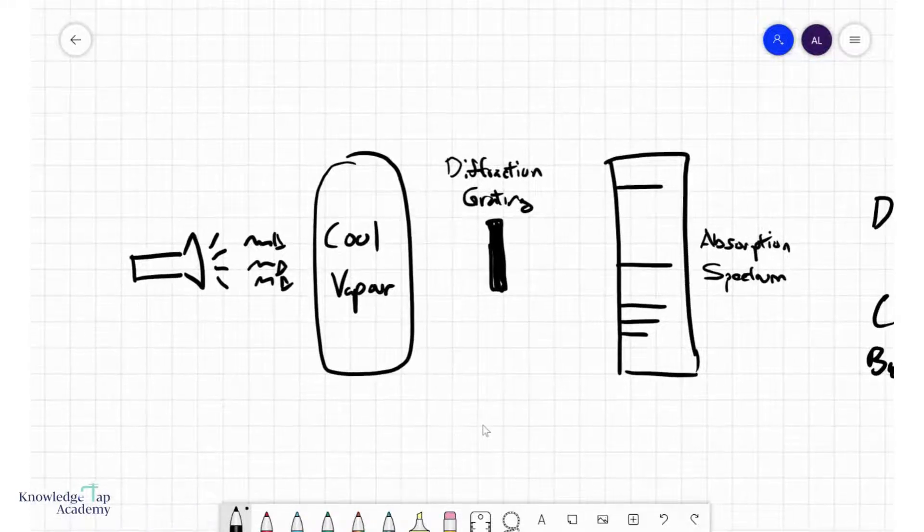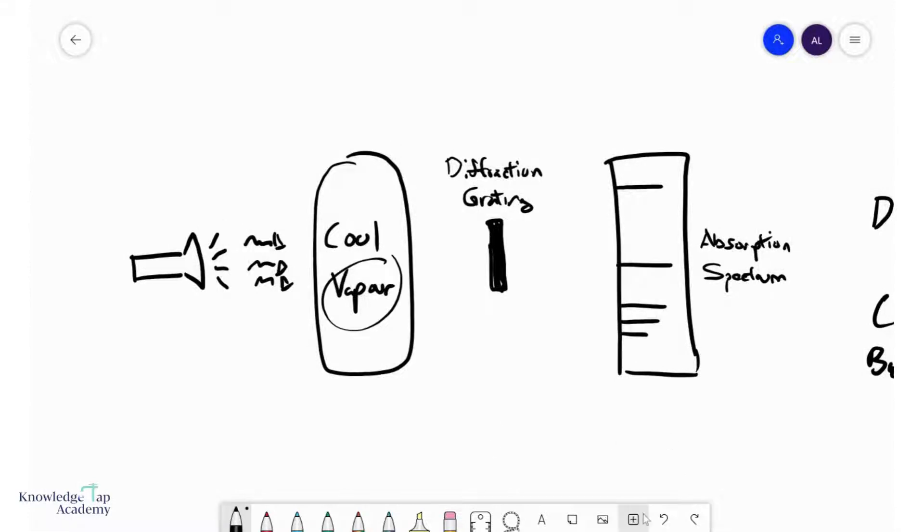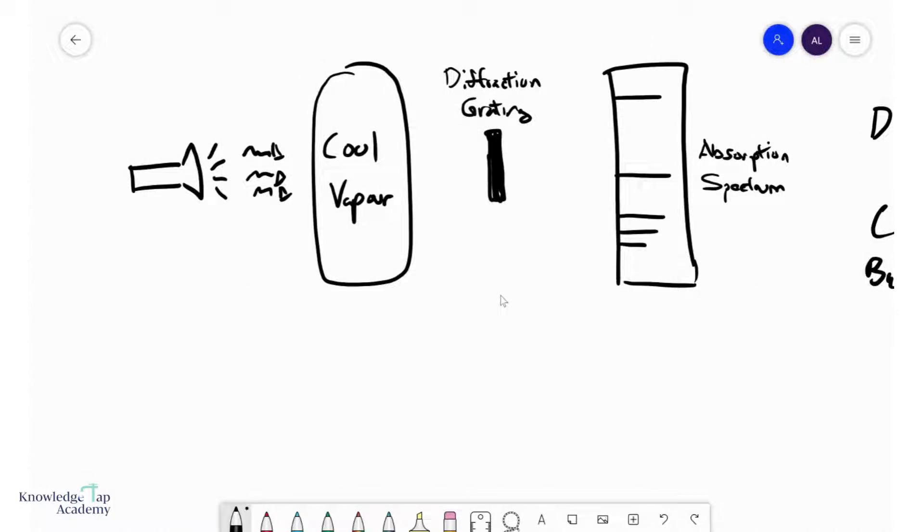It is meant to help us identify the nature of this vapor. However, the method in which it's created is slightly different. What is different now is that we first need to have white light.